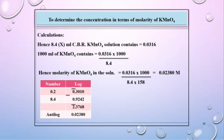Hence, 8.4 ml, which is the CBR KMnO₄ solution contains 0.0316. Therefore, 1000 ml of KMnO₄ solution contains 0.0316 × 1000 ÷ 8.4. Hence, molarity of KMnO₄ in the solution is equal to 0.0316 × 1000 ÷ 8.4 × 158. Answer is 0.02380 molar.